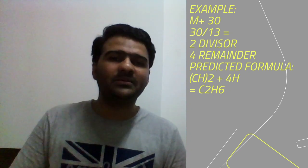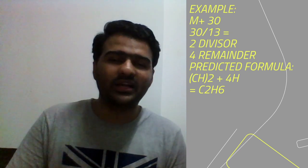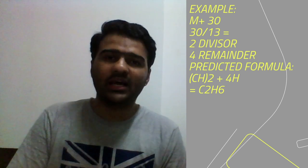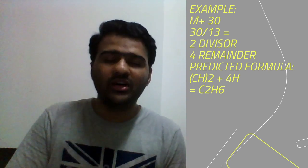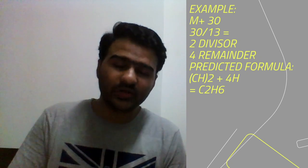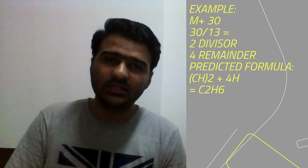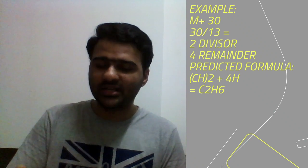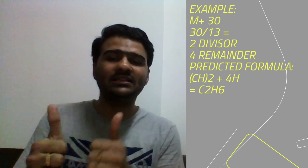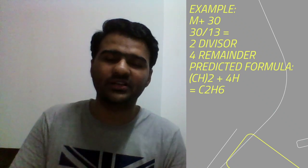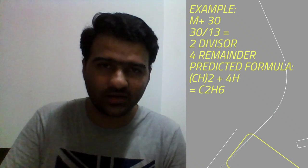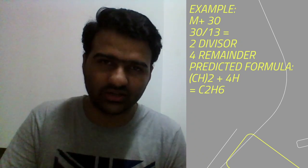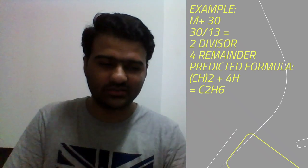Is there any other better way to find out the molecular formula of an organic compound? The answer is yes. In this tutorial, we are going to use the relative ratios of abundance between C12 and C13 — two different isotopes of carbon — to magically give us the molecular formula of the organic compound. Let's get started.